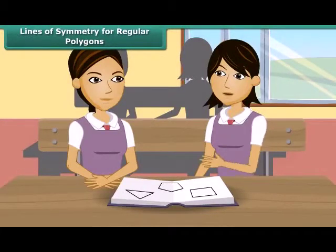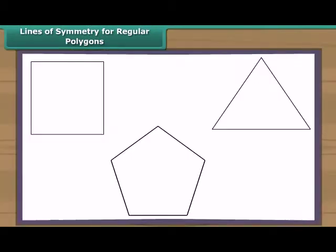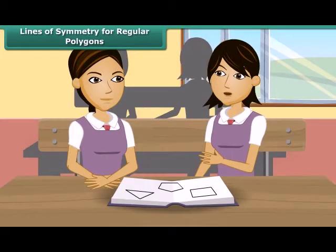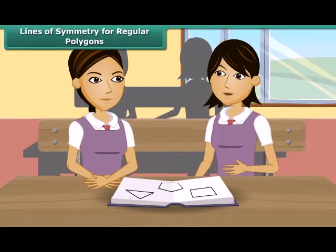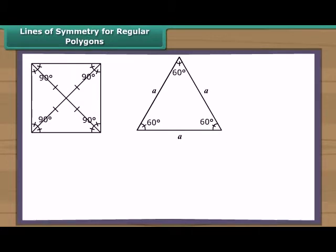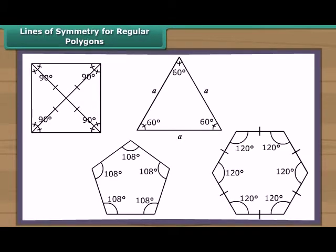Now I will tell you about lines of symmetry in regular polygons. Do you know what a regular polygon is? It is a closed figure made up of several line segments, and a triangle is a polygon made up of at least three line segments. A regular polygon is one whose all the line segments are equal and the measures of all the angles are equal.